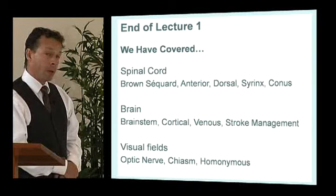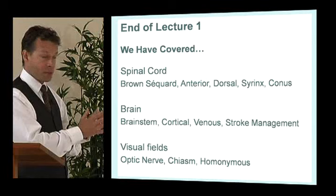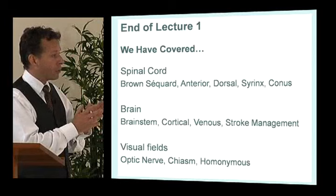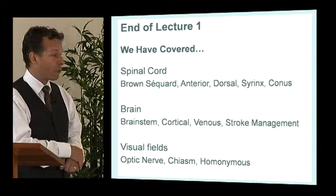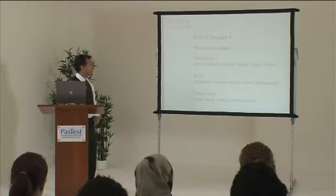That's the end of lecture one. So far we've covered the spinal cord and the various spinal cord syndromes — Brown-Séquard syndrome, anterior spinal cord syndromes, dorsal cord syndromes, syrinxes, conus lesions — problems with the brain, brainstem strokes, cortical stroke syndromes, venous strokes, stroke management, and optic fields with problems involving the optic nerve, chiasm, and optic radiation. Thank you very much.